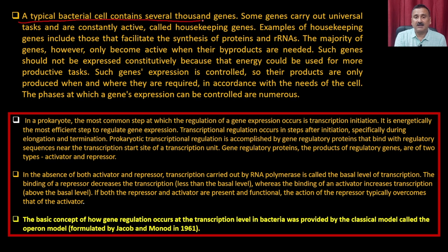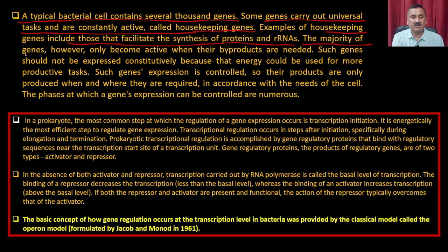A typical bacterial cell contains several thousand genes. Some genes carry out universal tasks and are constantly active — these are called housekeeping genes. For example, housekeeping genes include those that facilitate synthesis of protein and ribosomal RNA. The majority of genes, however, only become active when their byproducts are needed. Such genes should not be expressed constitutively, because the energy could be used for more productive tasks.